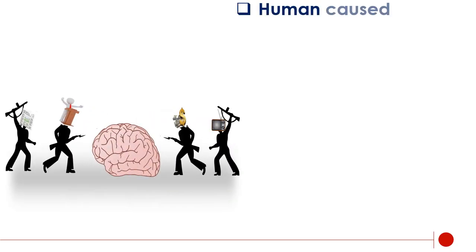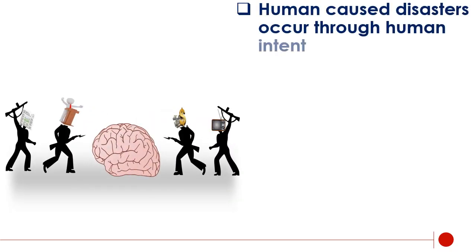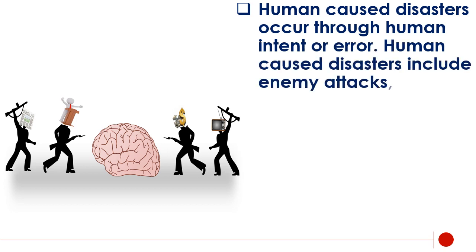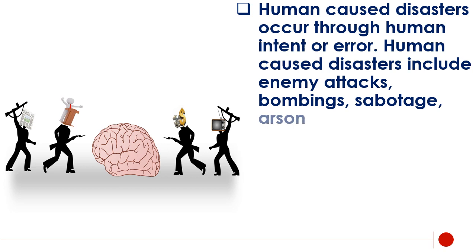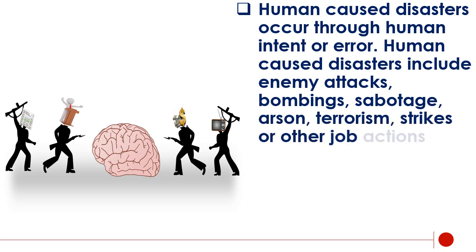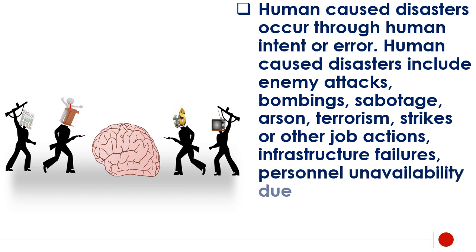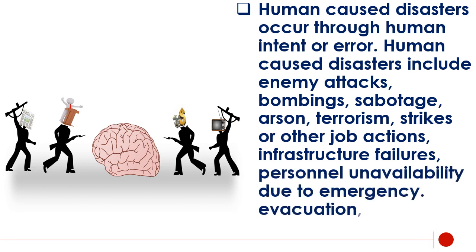Human-caused disasters occur through human intent or error. Human-caused disasters include enemy attacks, bombings, sabotage, arson, terrorism, strikes or other job actions, infrastructure failures, personnel unavailability due to emergency, and evacuation.